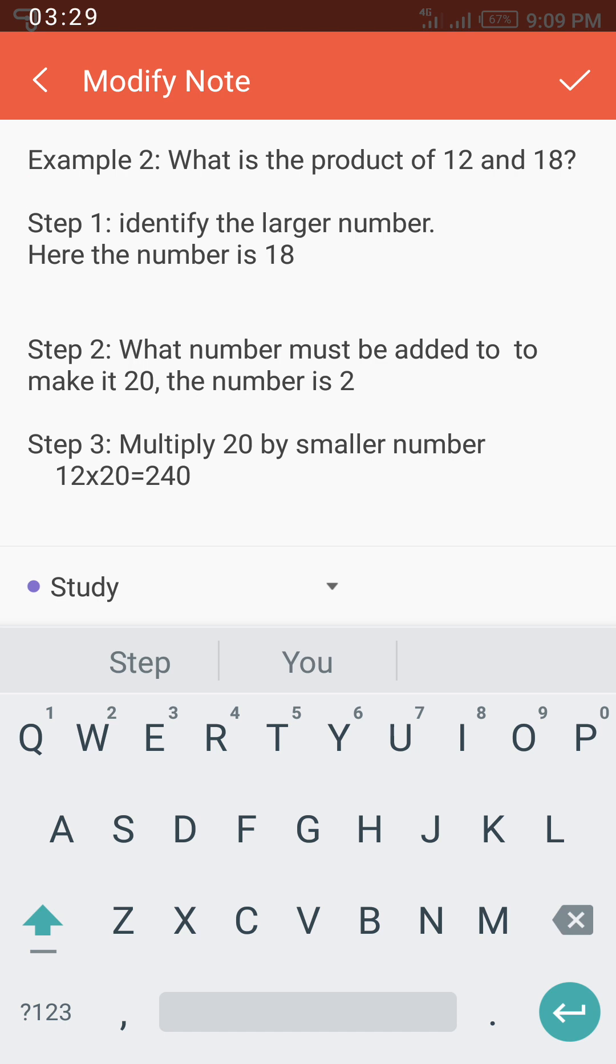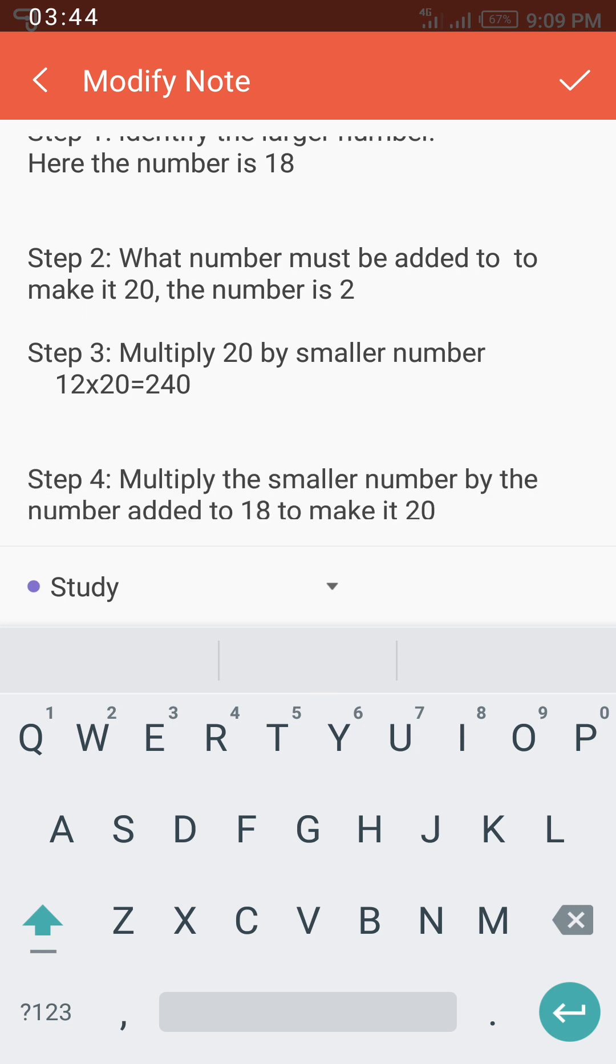What we need to do in Step 2: we must look for a number that should be added to 18 to make it 20, so that the digit here, the unity, will be zero. It is 2 that we need to be added to 18 to make it 20. Step 3: now we don't need to use 18 again.